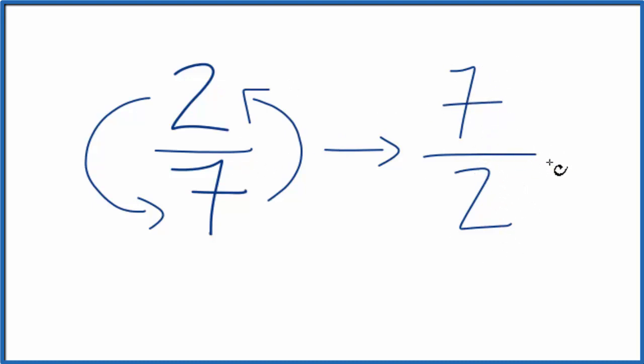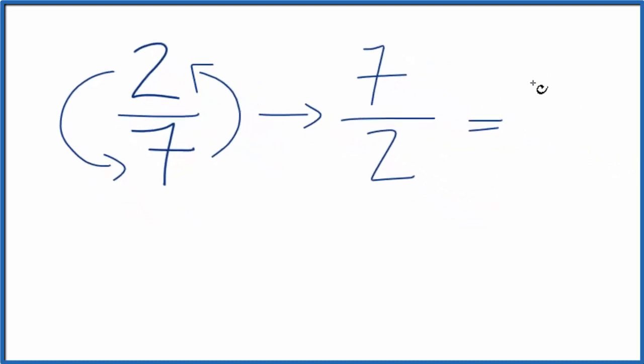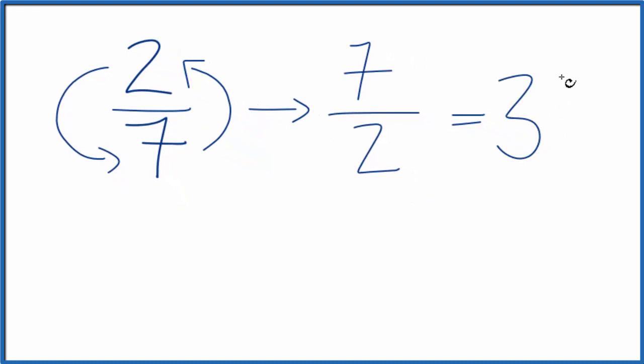This is an improper fraction. We could change it to a mixed fraction because two goes into seven three times with one left over. So we could also call the reciprocal three and a half, which is the same thing as seven over two.